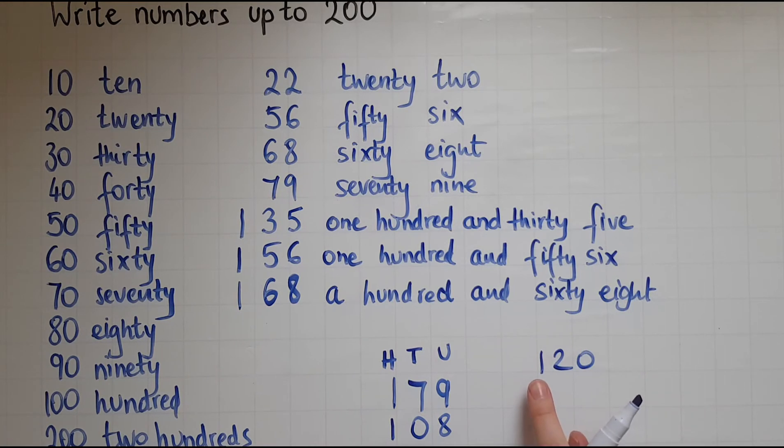This would be 120. Because there are two tens, but no units. Whereas this, it would be 121. And how would I read this? A hundred and ninety-nine.